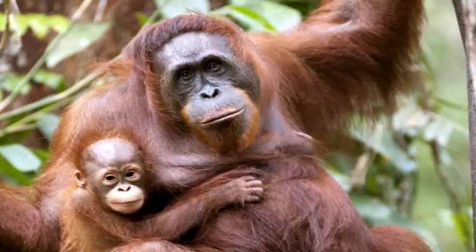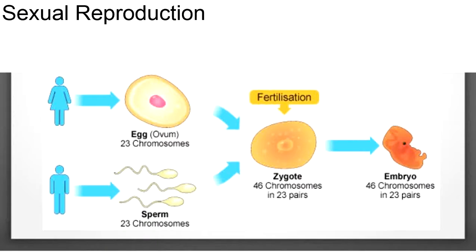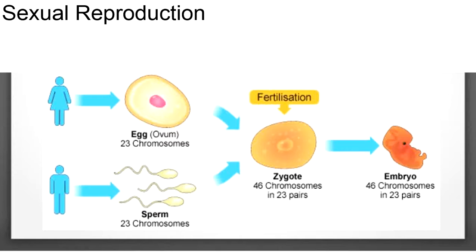There are two forms of reproduction: asexual and sexual. Sexual reproduction is a type in which two cells are involved — the male and the female cells. The male cell is known as the sperm cell, while the female cell is known as the egg cell. When the sperm cell joins the egg cell, this is known as fertilization, and after fertilization the new individual starts to grow.